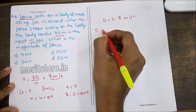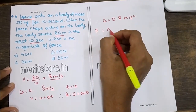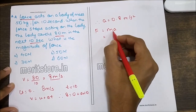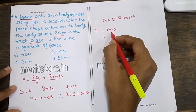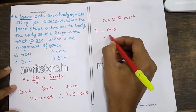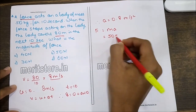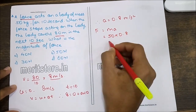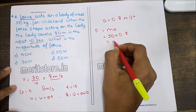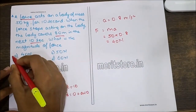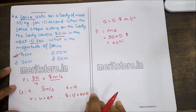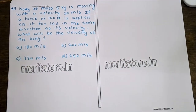Force is mass times acceleration: 50 kg into 0.8 = 40 N. Hence option A is the correct answer.